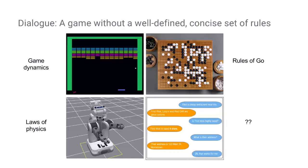Atari games have their dynamics, the game of Go has its rules, and in robot simulations, the laws of physics provide a lot of structure to what can happen in the simulated world. For dialogue, we don't have a concise set of rules, so it's difficult to come up with a simulation environment that can tackle that.